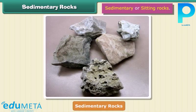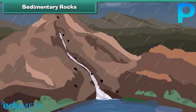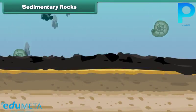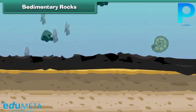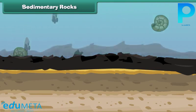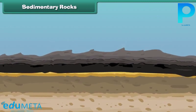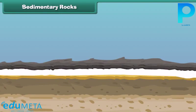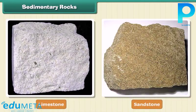The second type of rock is sedimentary rock. These are also called sitting rocks. Rocks roll down, crack, and hit each other, then they are broken down into small particles called sediments. The sediments are transported and deposited by wind, water, etc. These loose sediments are compressed and hardened to form layers of rocks — these are called sedimentary rocks. Limestone and sandstone are examples of sedimentary rock.